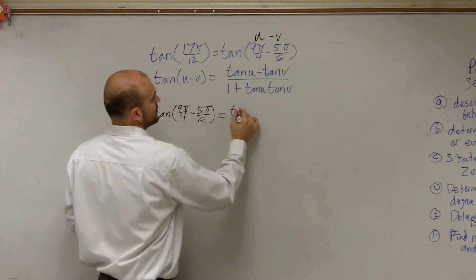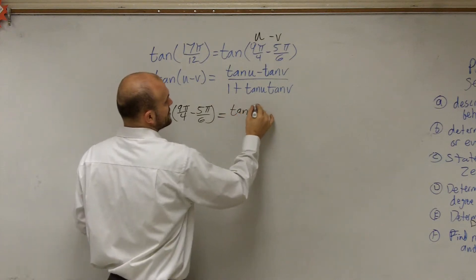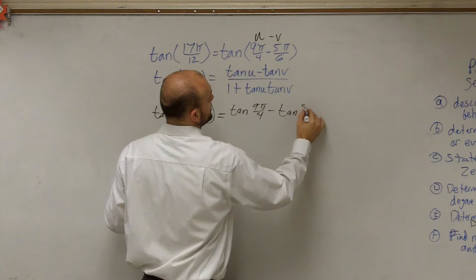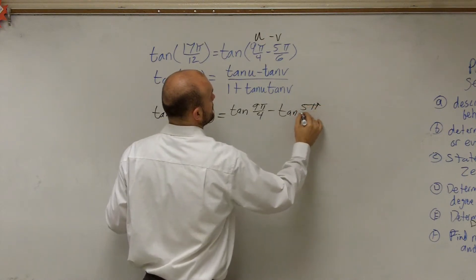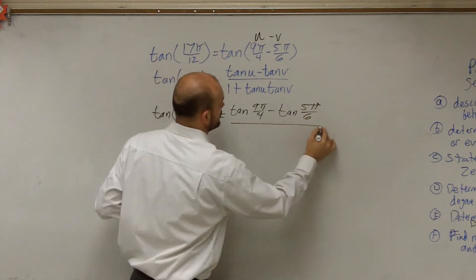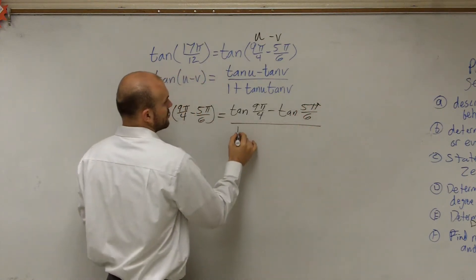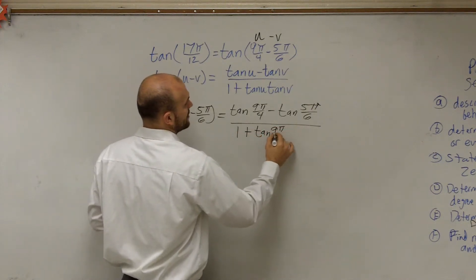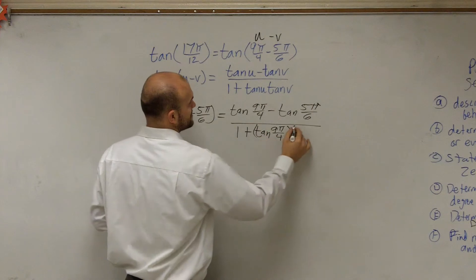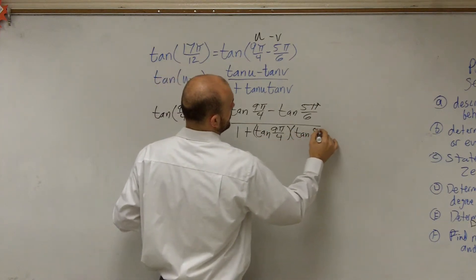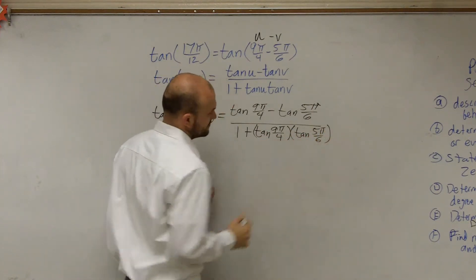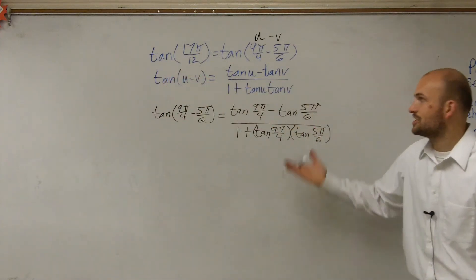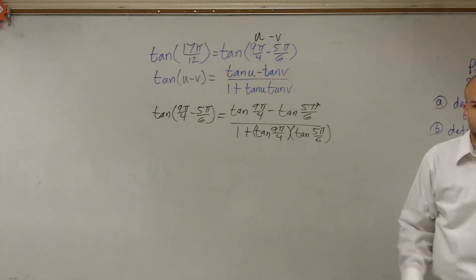So the tangent of 9π/4 minus 5π/6 is equal to the tangent of 9π/4 minus the tangent of 5π/6, all divided by 1 plus the tangent of 9π/4 times the tangent of 5π/6. Just taking our angles and plugging them into the formula.